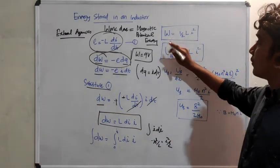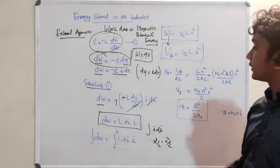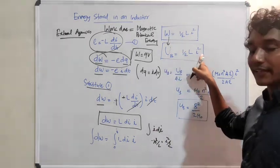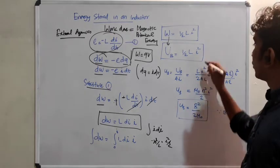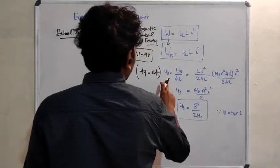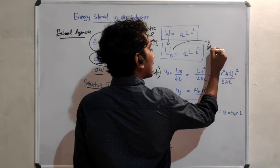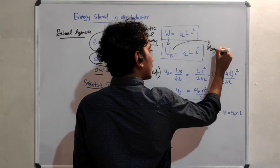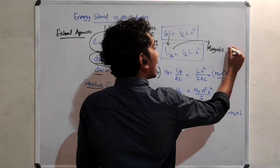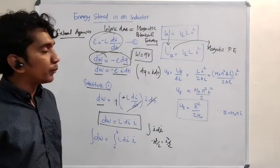This work done will be stored as magnetic potential energy. So UB = half L I squared. UB is the magnetic potential energy — don't forget that notation.